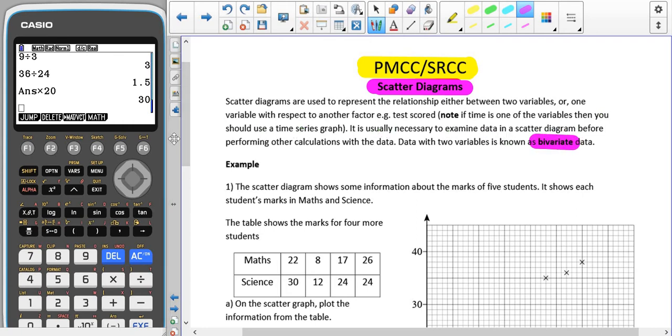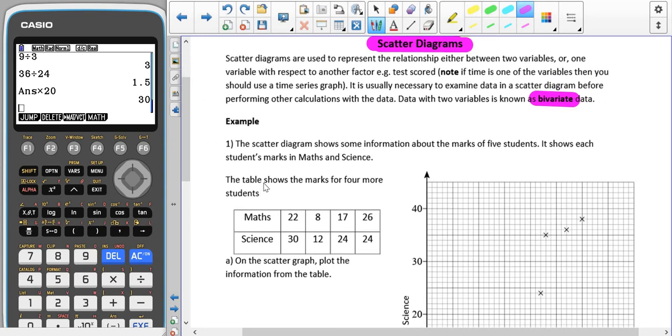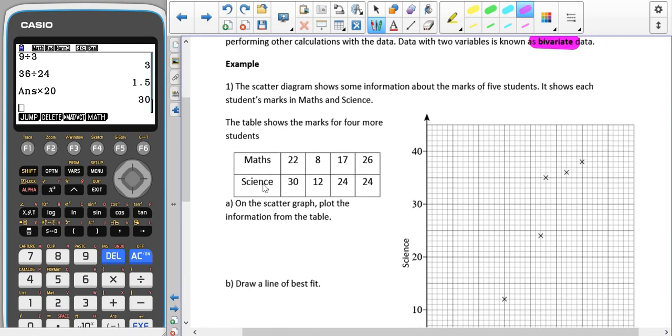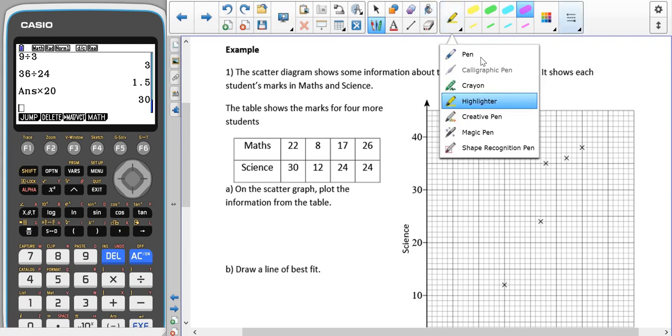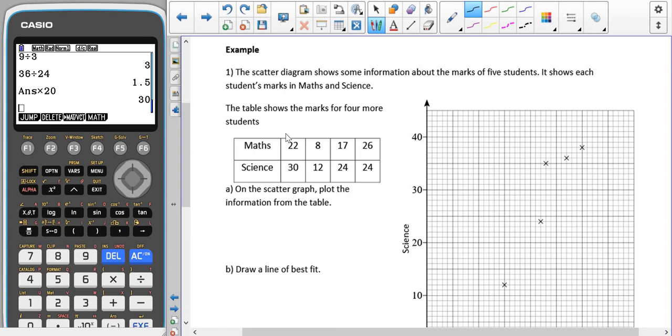Data with two variables is called bivariate data, and that's very important. Bivariate data is where you have two pieces of information about the same thing, not two samples of data where you have the same sized samples. So here we have the scatter diagram showing some information about the marks of five students. It shows each student's mark in both maths and science, and we have a table with four more students. This means that student A got 22 in maths and 30 in science.